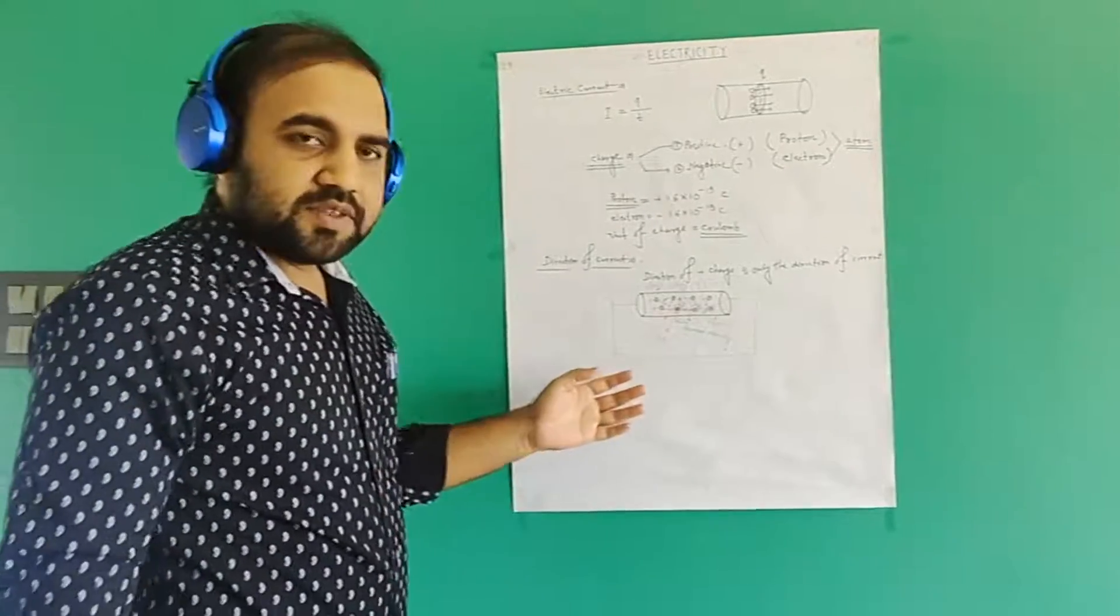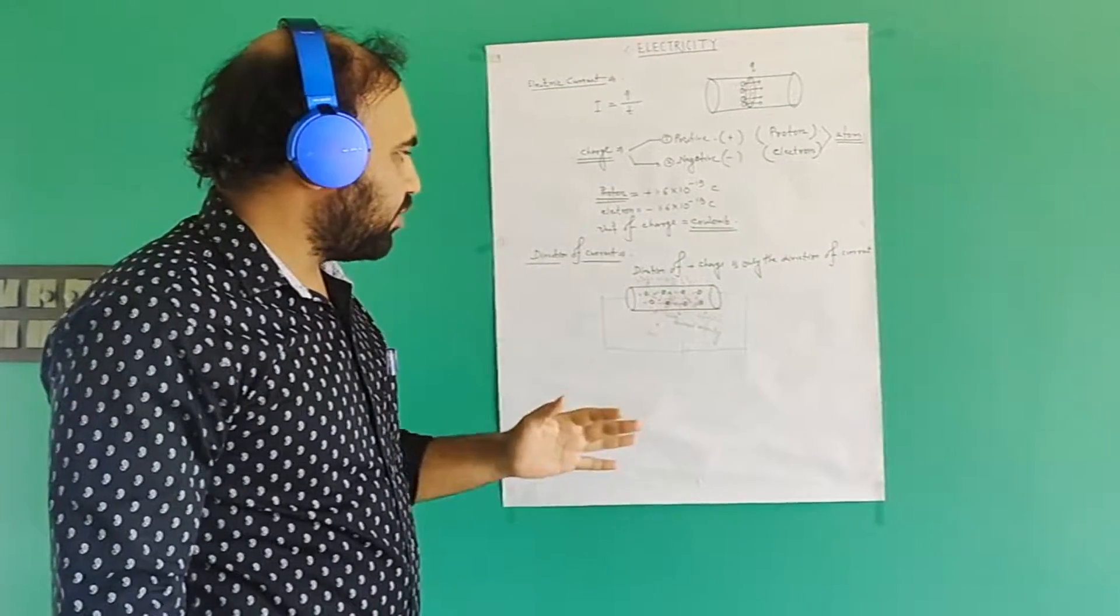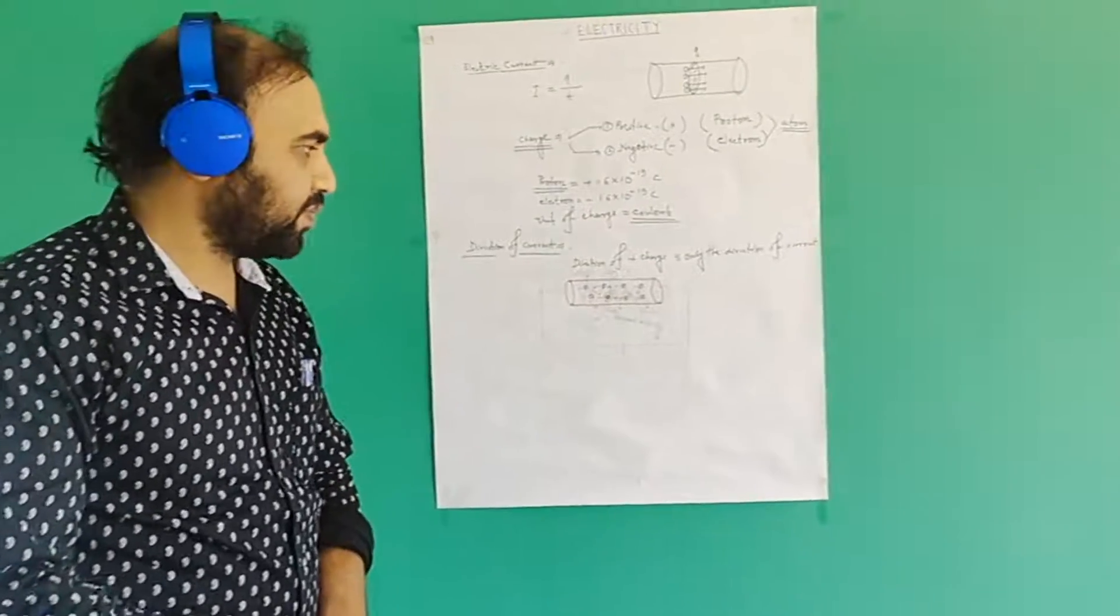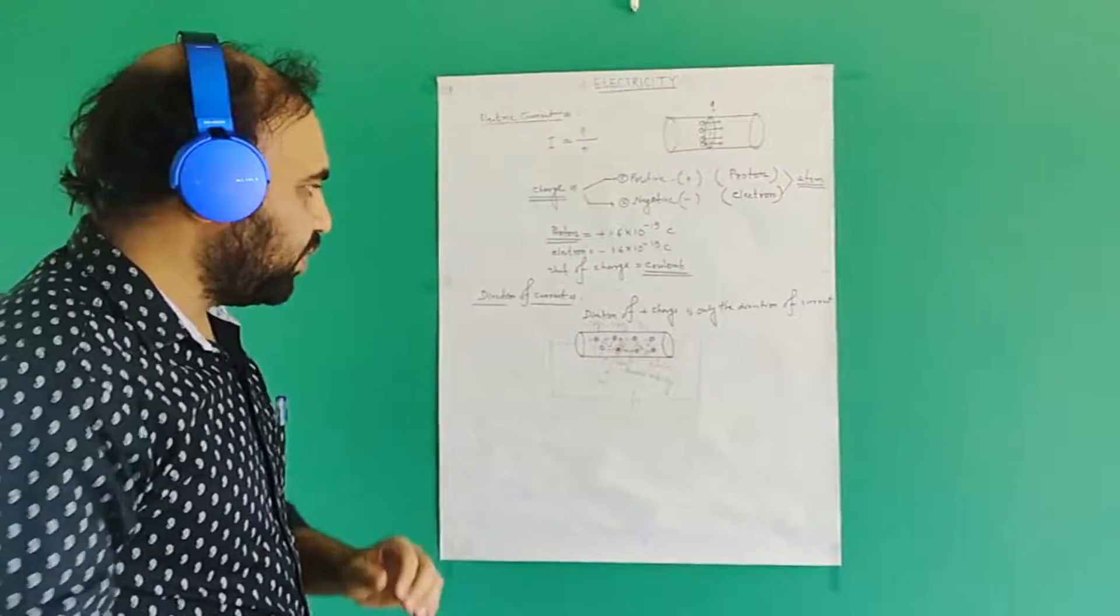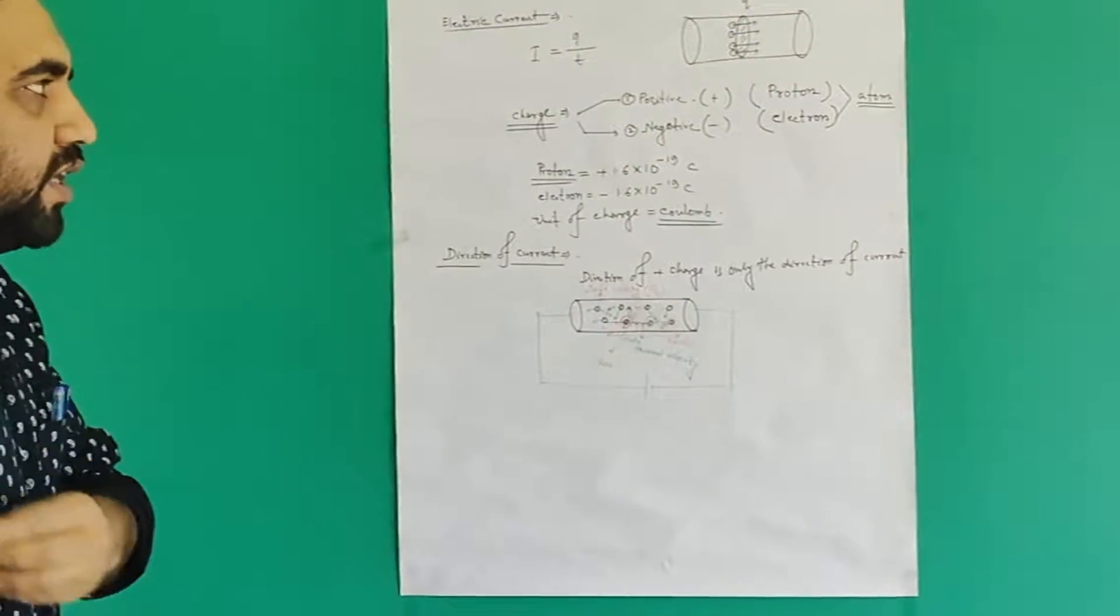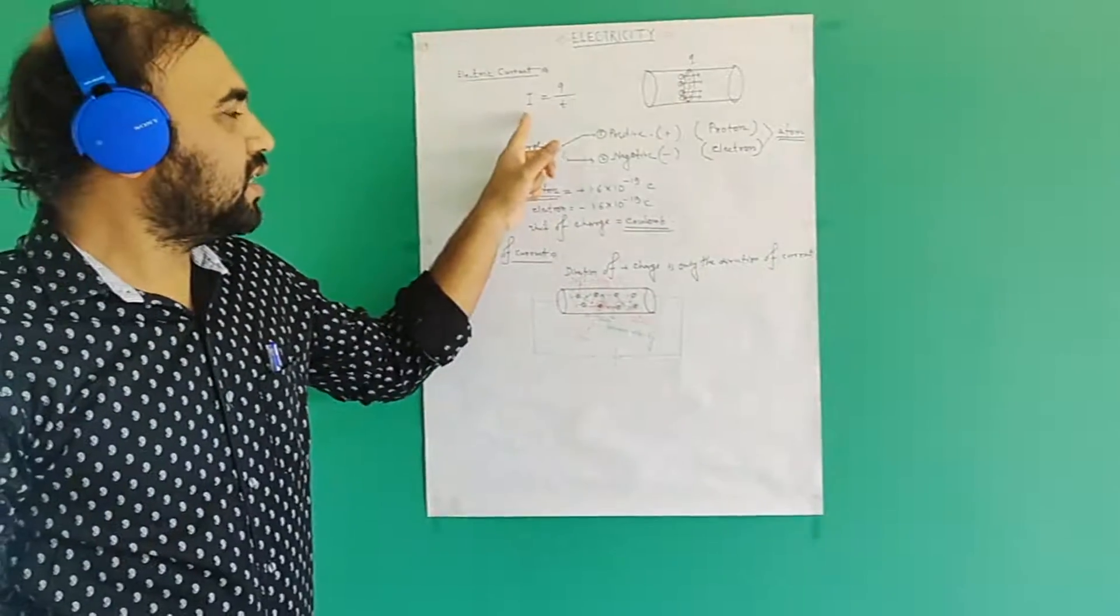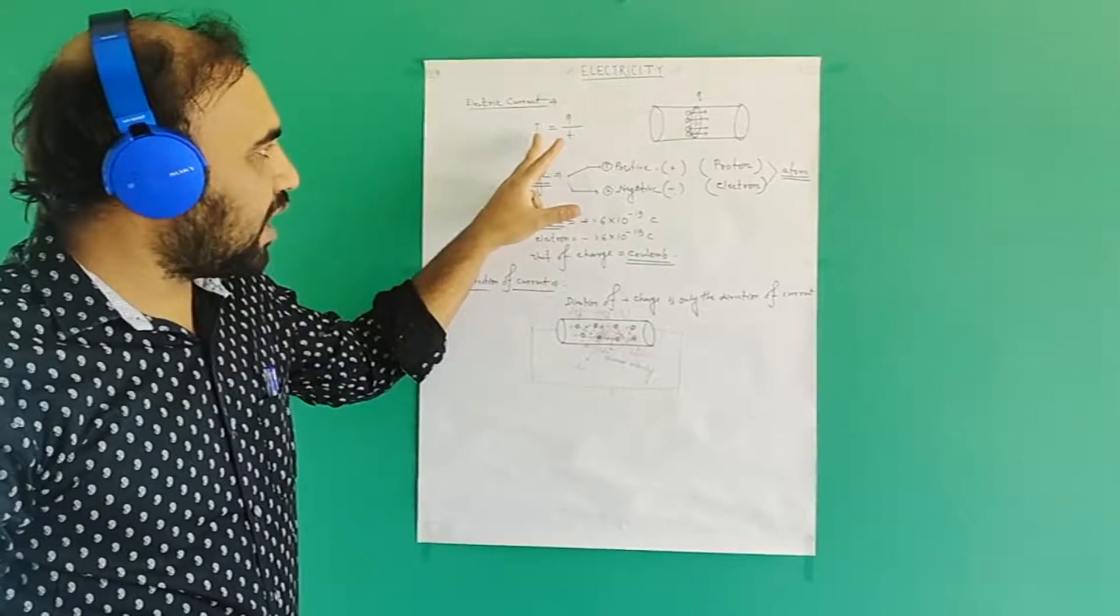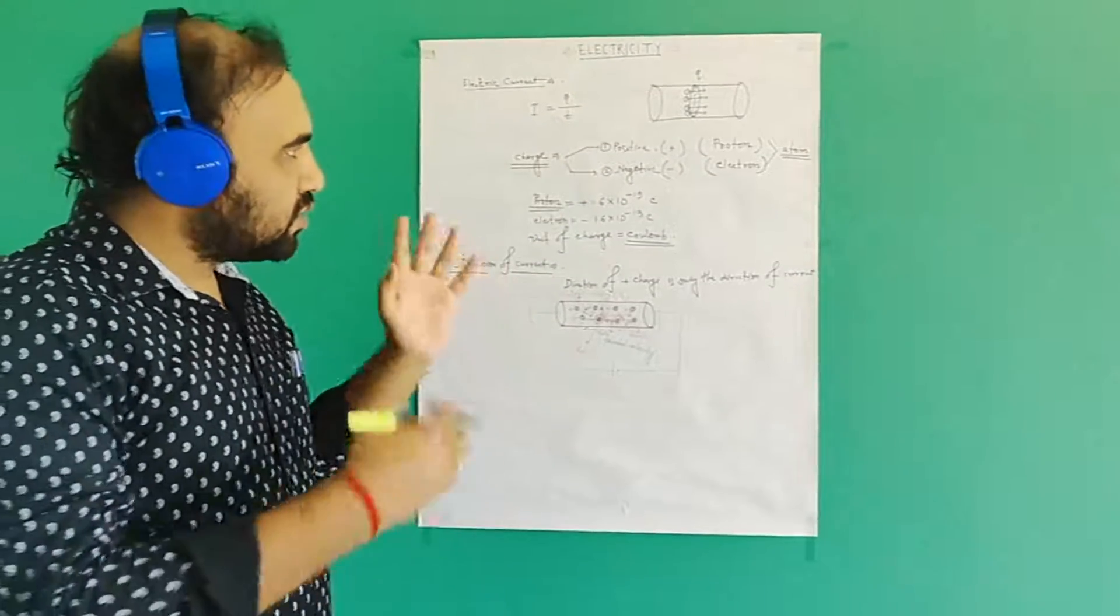From the previous video we came to know about the direction of current. Now we will discuss the equation of current. We know about the current equation I = Q/T. So what will be the other equation for current? Let's proceed.